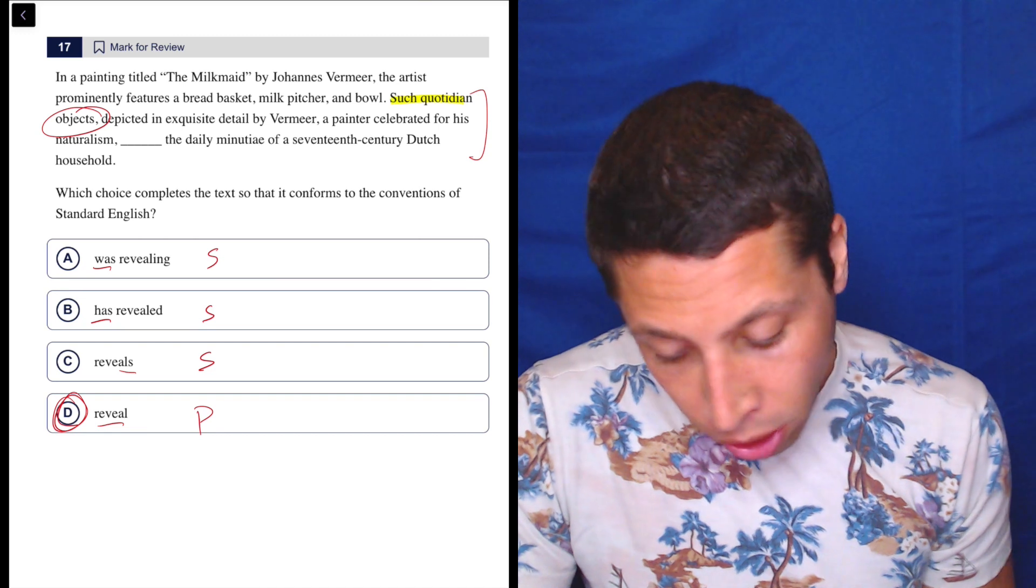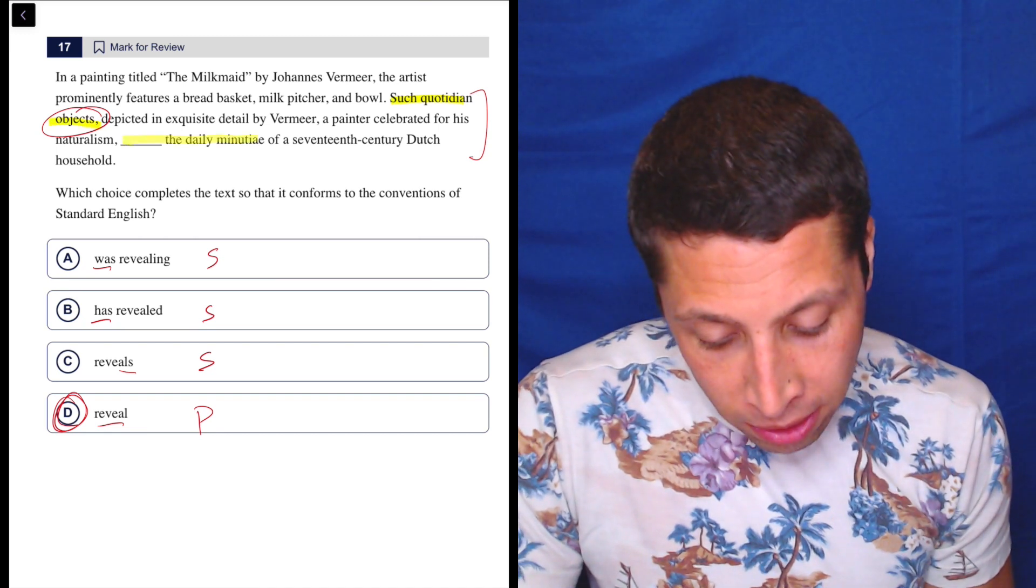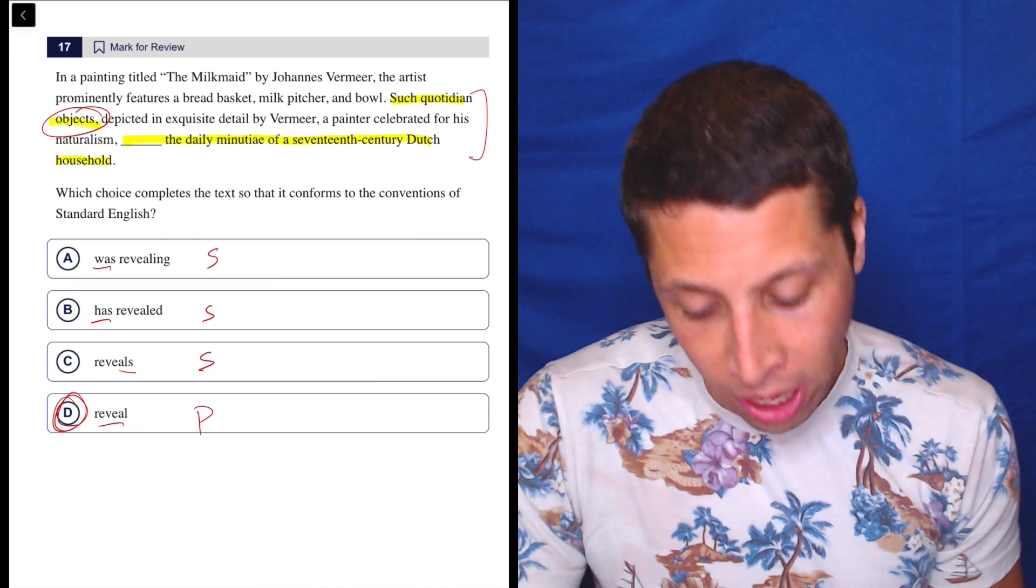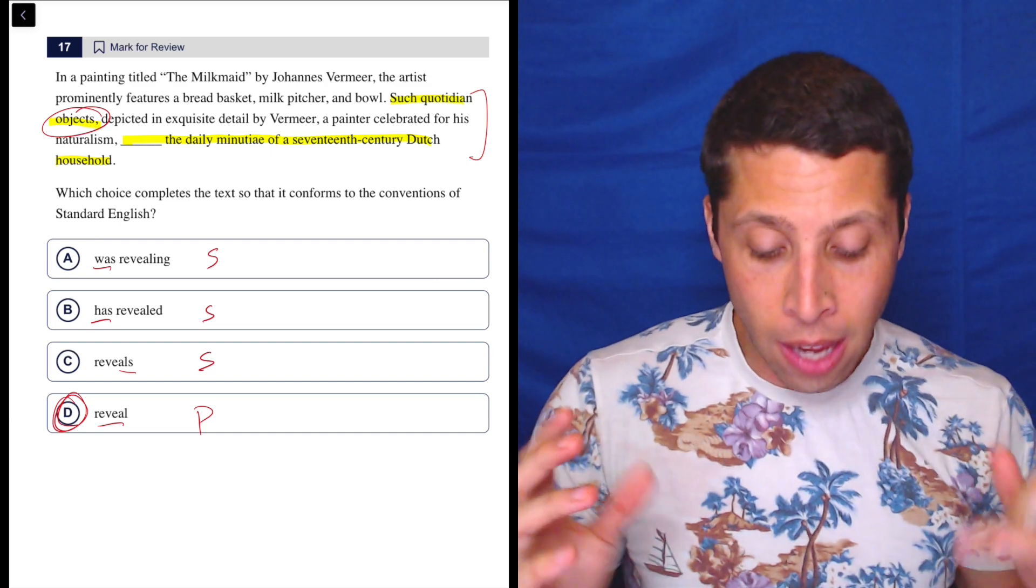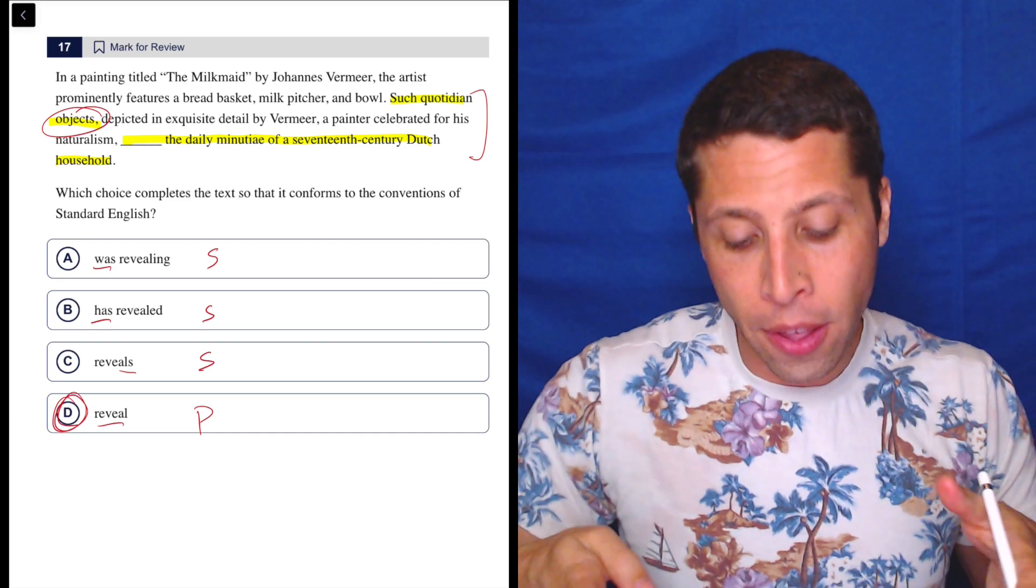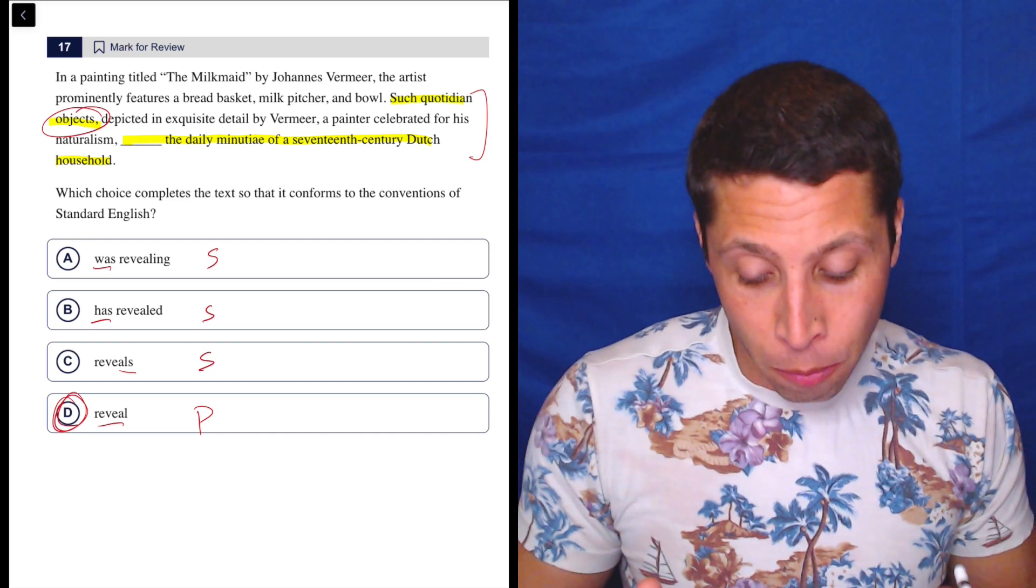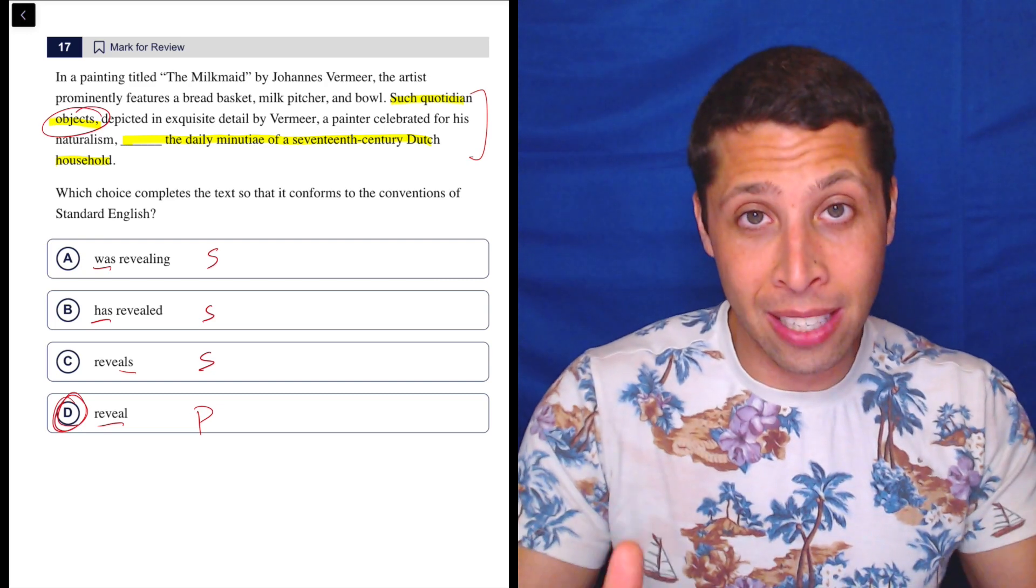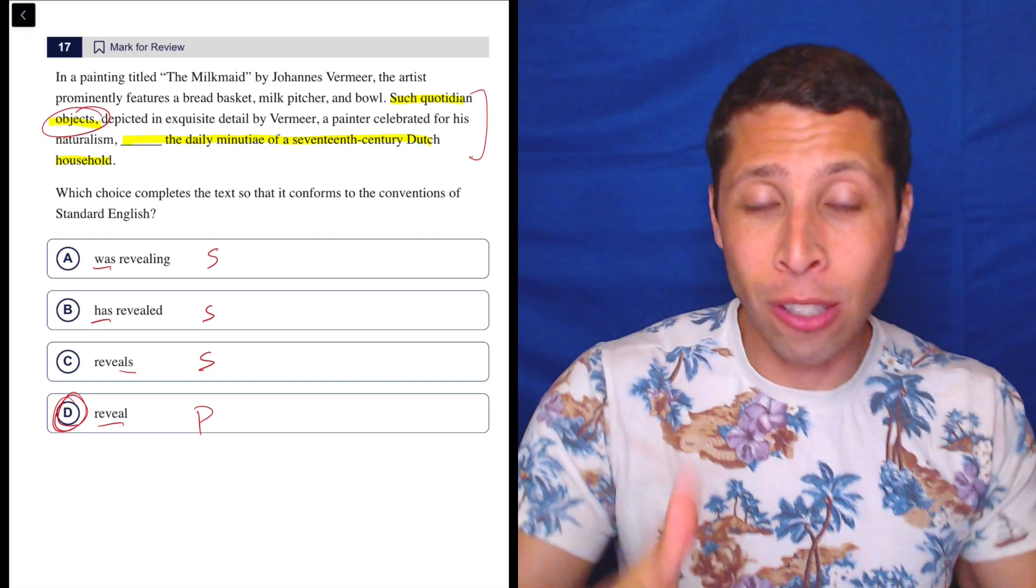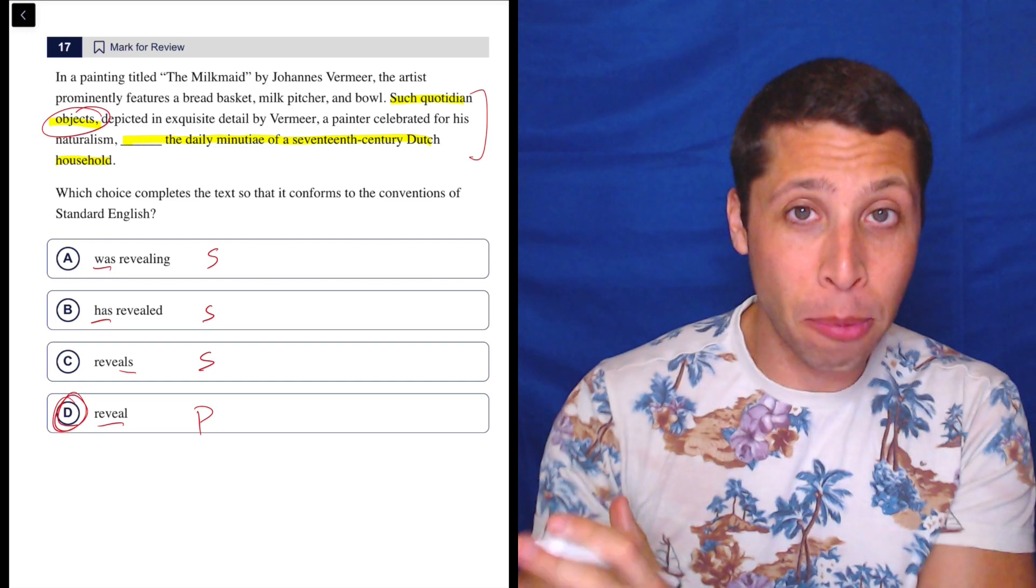If I just highlight the sentence: 'such quotidian objects reveal the daily minutia of a 17th century Dutch household' - that's the sentence. The other parts here, you can see these commas, they are inserting a bunch of interruptions. First, 'depicted in exquisite detail by Vermeer' is an interruption describing the objects.